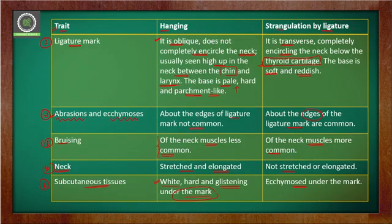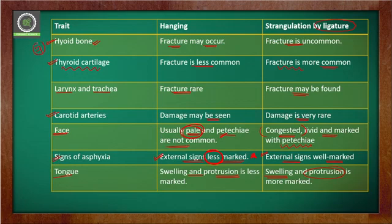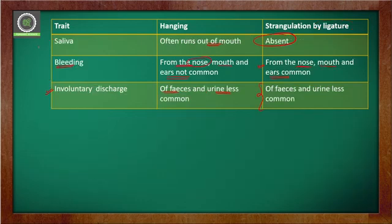So these are the points — 16 in total — on the basis of which we have differentiated hanging and strangulation by ligature.